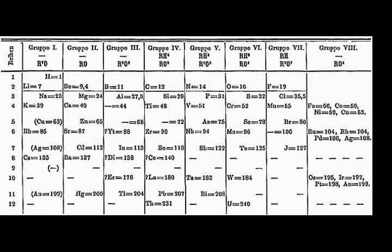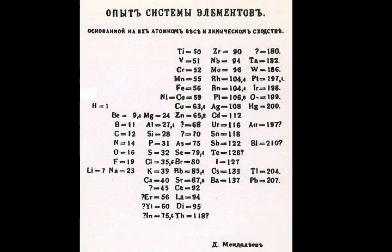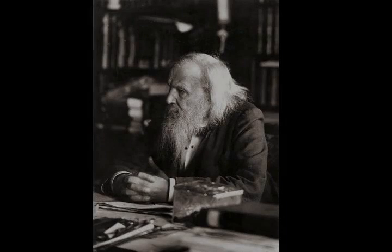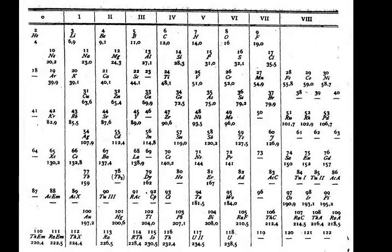The underlying reason for these trends is electron configurations of atoms. The first periodic table to become generally accepted was that of the Russian chemist Dmitry Mendeleev in 1869, who formulated the periodic law as a dependence of chemical properties on atomic mass. Because not all elements were then known, there were gaps in his periodic table, and Mendeleev successfully used the periodic law to predict properties of some of the missing elements.